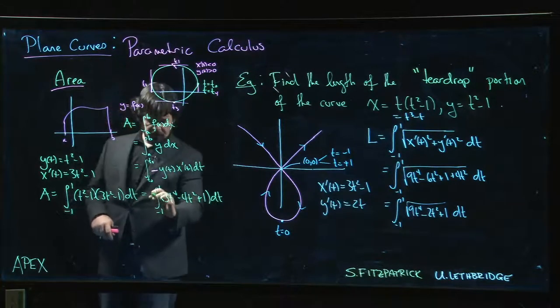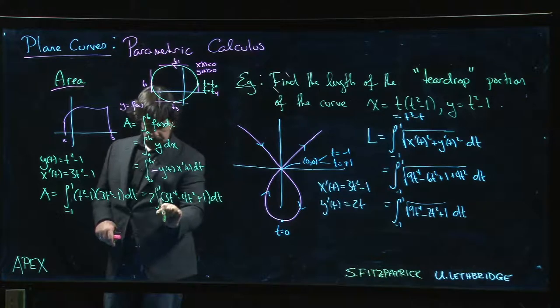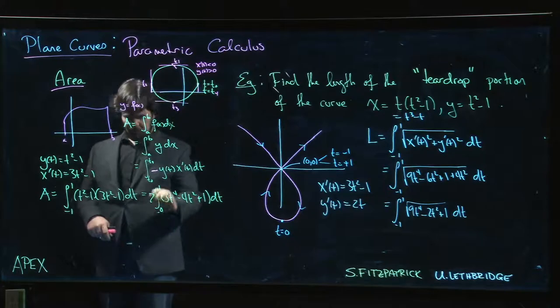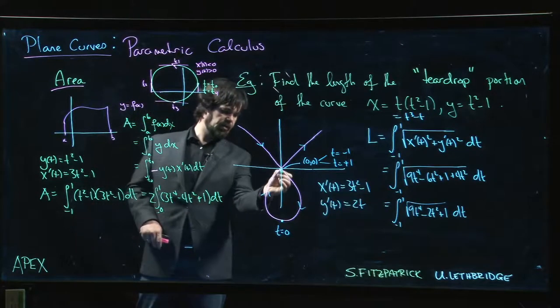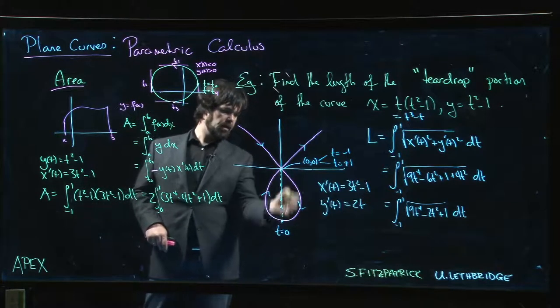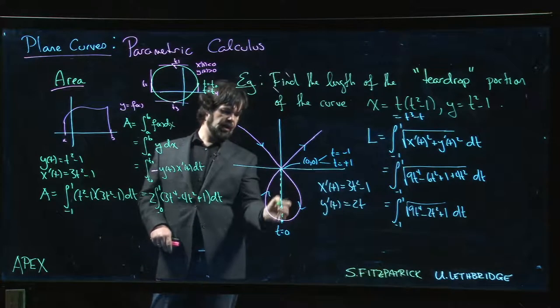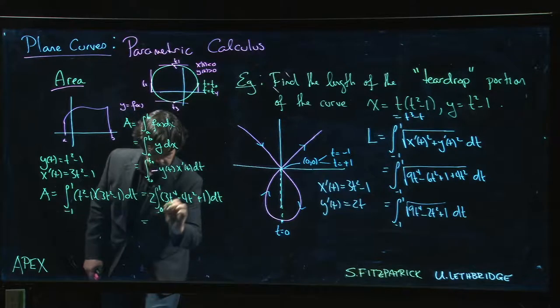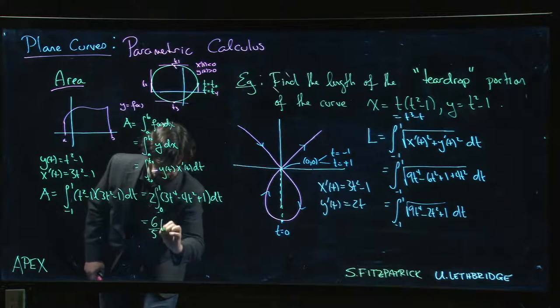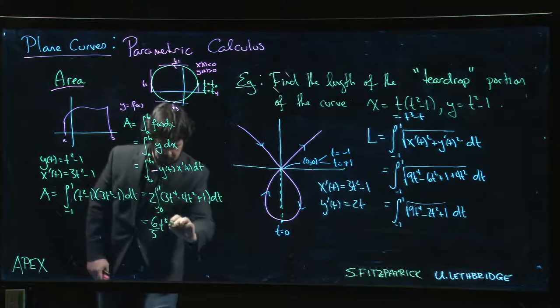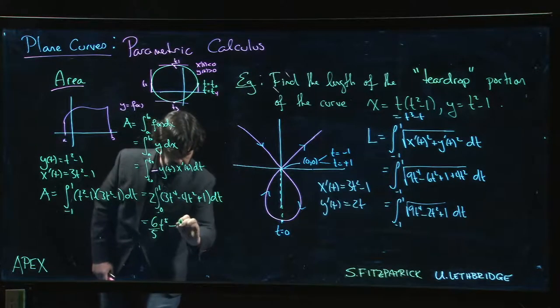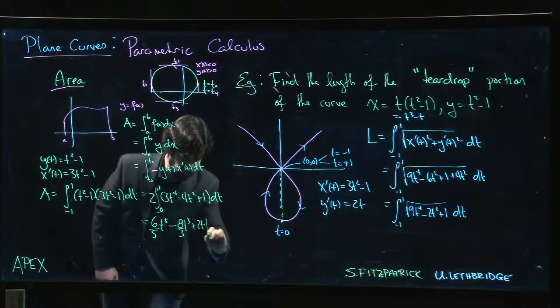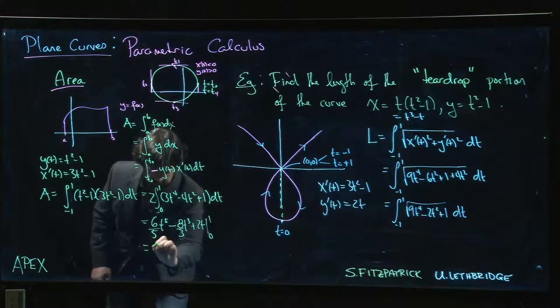You go from -1 to 1. I've got 3t⁴ - 4t² + 1 dt. Again, it is even, so I could double it, use symmetry, go from 0 to 1 and double it, because going from 0 to 1 gives me half the area.